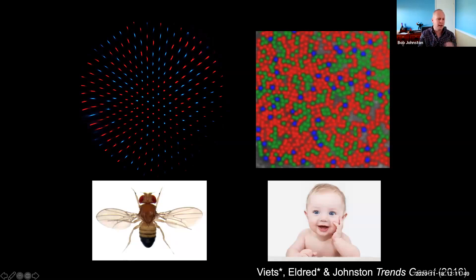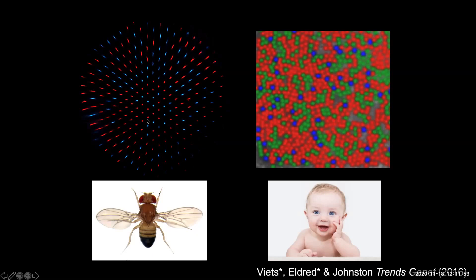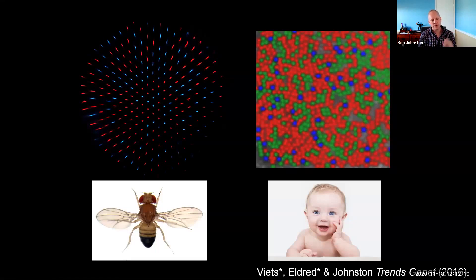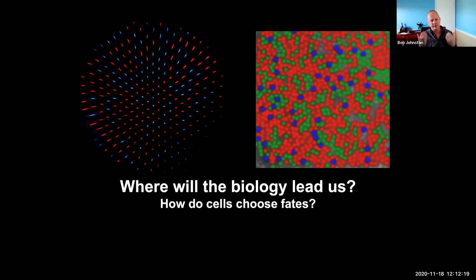There are two main types of color detectors in the fruit fly eye, and these are randomly distributed across the eye. In humans, there are three types of cone cells that detect either red, green, or blue light. All of our work is rooted on these patterns, and we start with the question: where will the biology lead us? Over the years, we've asked a series of different questions, most of them around the central question of how do cells choose fates — in other words, how does the blue cell know how to be a blue cell, and how does a red cell know how to be a red cell?